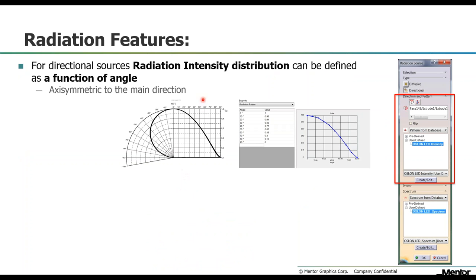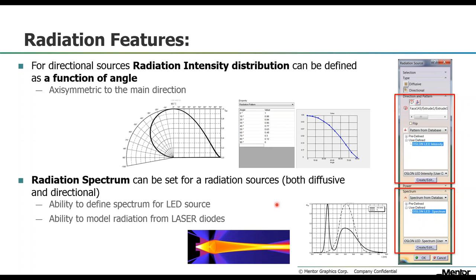Another recently released feature is radiation intensity. A data sheet screenshot shows that the LED has a radiation intensity with a specific angular distribution, plotted in both polar and Cartesian coordinate systems. You can take those data points, put them into the FlowEFD database, and use them as a radiation source in the simulation. You can also specify a spectrum — for example, red, blue, or green LEDs have different spectra, as does a laser, which has a very sharp needle-like spectrum.